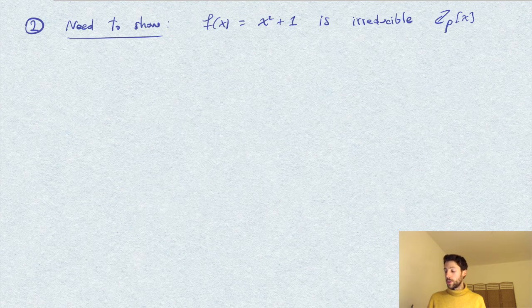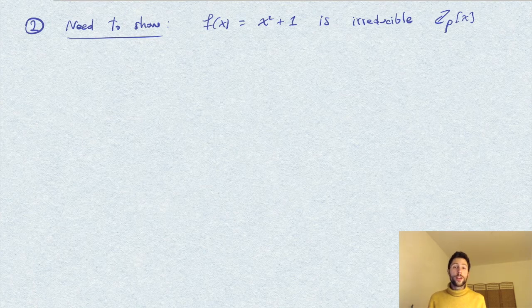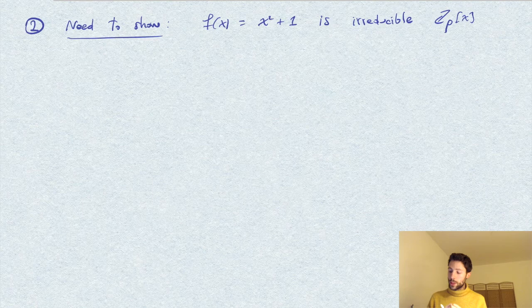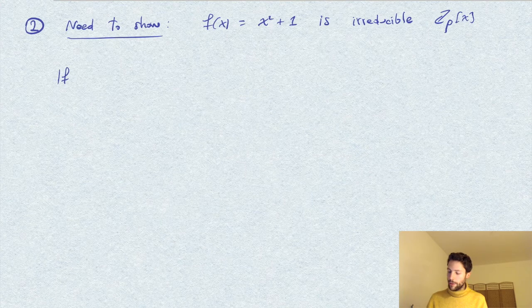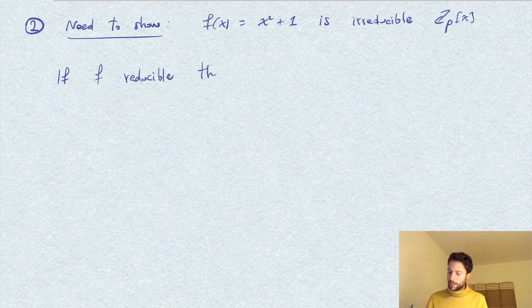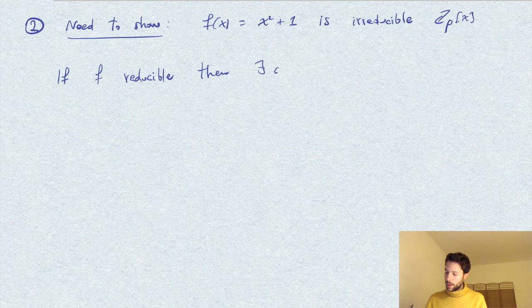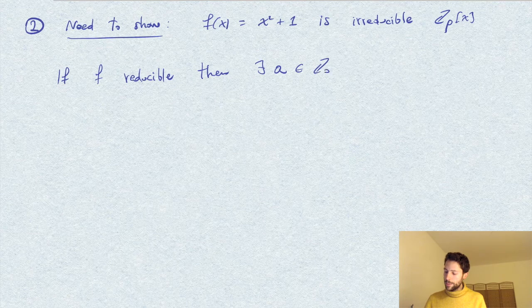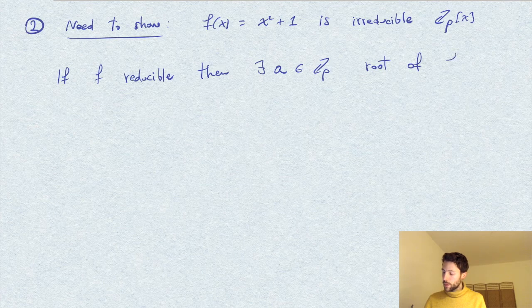So this is what we need to show. Now how do we show that this polynomial is irreducible? Well, it's a polynomial of degree 2. Therefore, if it were reducible, it would split into a product of polynomials of degree 1, so in particular it will have a root in our, in the scalars, so in Z_p. So we suppose that f is reducible, then there would exist a root. So there would exist an element, say a, in Z_p, root of f.